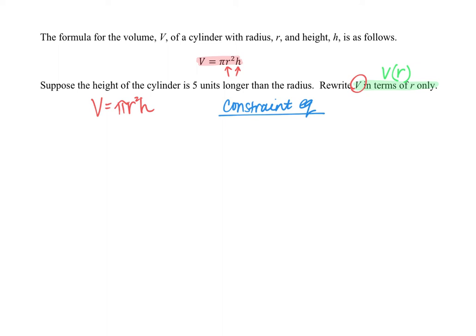So as we read again, it says that the height of the cylinder is 5 units longer than the radius. This sentence is giving us very specific information relating the height and the radius. So our constraint equation will only involve h and r.